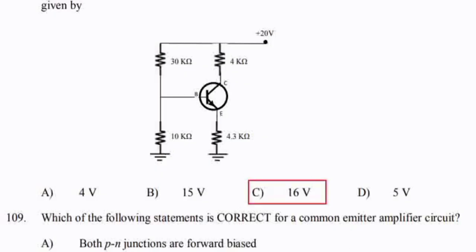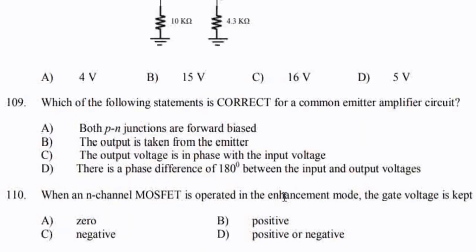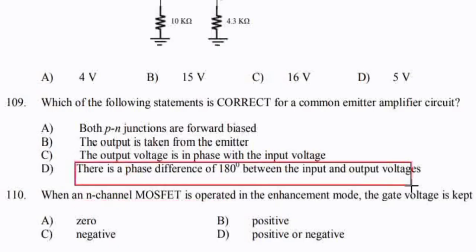Which of the following is a correct statement for a common emitter amplifier circuit? Option D: there is a phase difference of 180 degrees between input and output voltage.